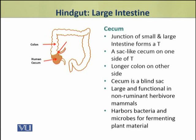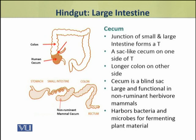Cecum is a blind sac which is not open on the other side. On the other side of the T there is a longer colon. Cecum is larger and more functional in non-ruminant herbivore mammals.